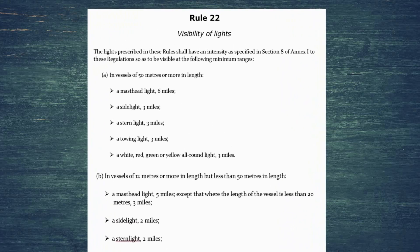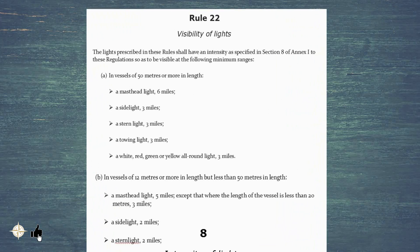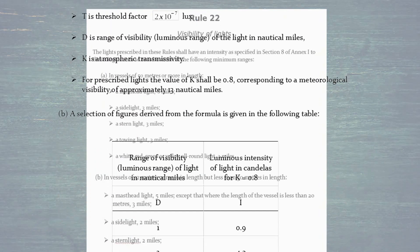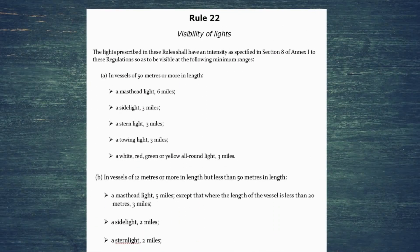So Rule 22, visibility of lights. The lights prescribed in these rules shall have an intensity as specified in Section 8 of Annex 1. We're not actually going to go through that, we just need to know you can look in the annex to see the intensities, but what we need is for them to be visible at the following minimum ranges.